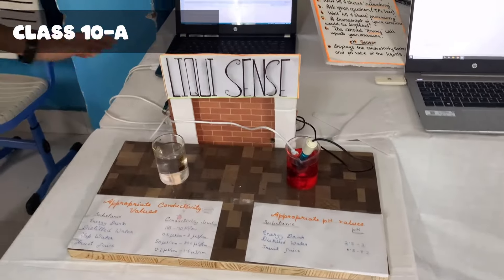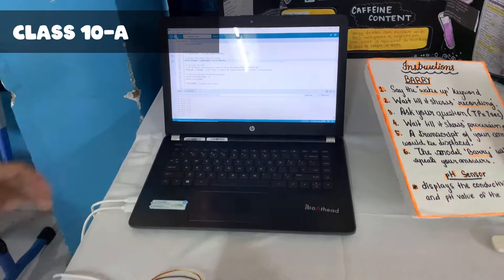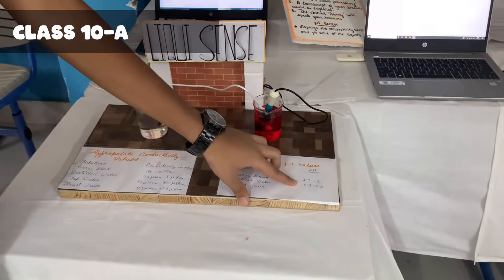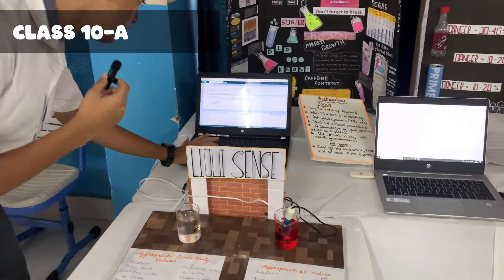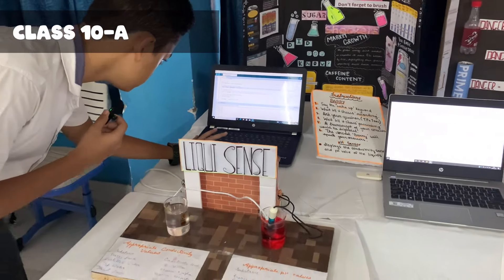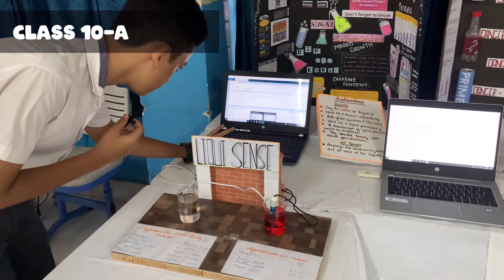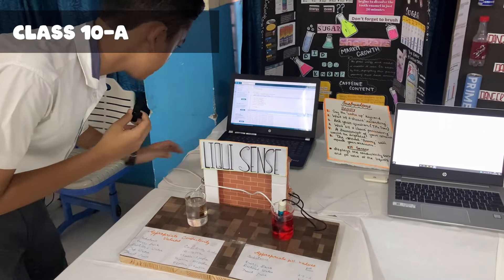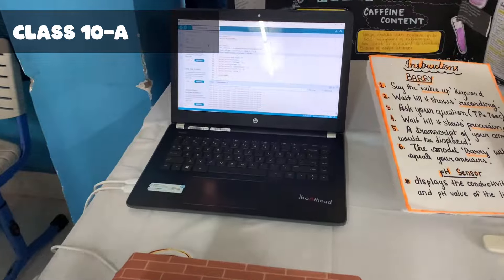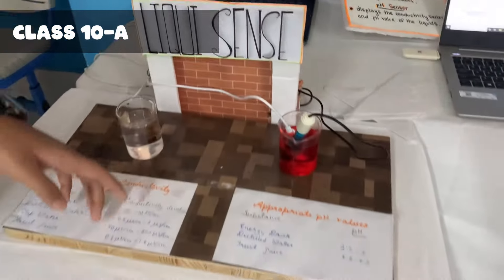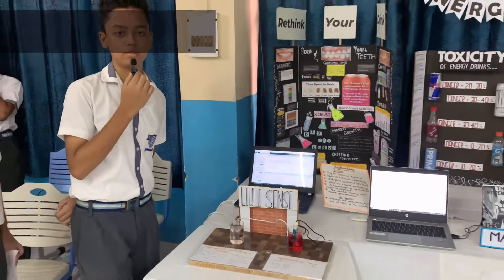Once we have dipped the pH sensor in the energy drink, it shows a pH of 3.61, which is more than the appropriate value set by the FDA, which is 2.5 to 3. When we check the conductivity sensor, we get a value of 139, which is again more than the value set by the FDA. Therefore, we consider this drink unhealthy for the human body.